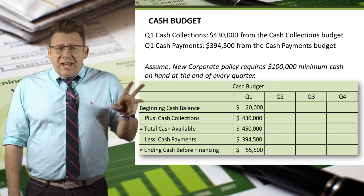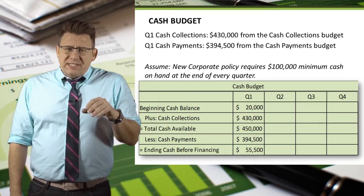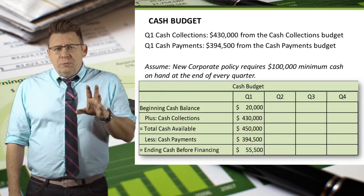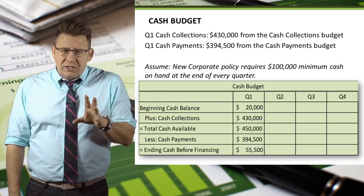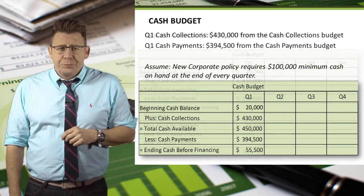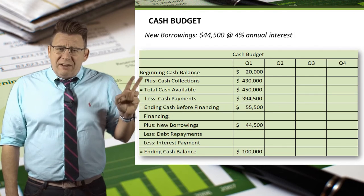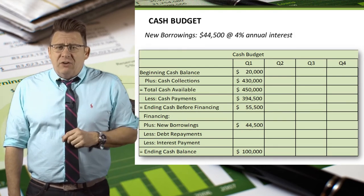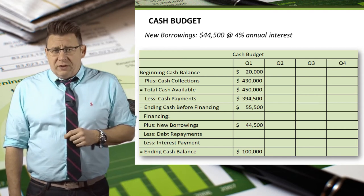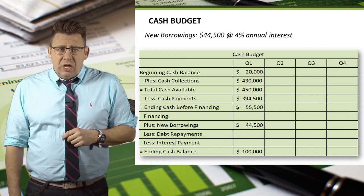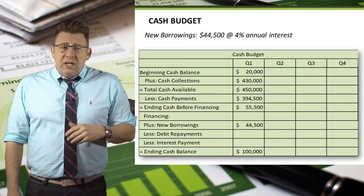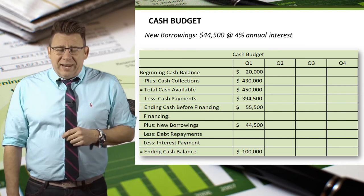To show how businesses budget short-term financial needs, let's assume a new corporate policy requires $100,000 of cash on hand at the end of each quarter. Since we have only budgeted $55,500, we need to borrow an additional $44,500. Our ending cash before financing plus new borrowings gives us the required $100,000 ending cash balance.